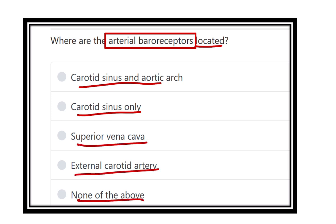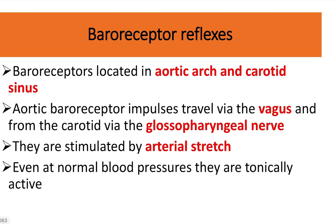The arterial baroreceptors are located in the aortic arch and the carotid sinus — these are the two important locations. Aortic baroreceptor impulses travel via the vagus nerve, and from the carotid sinus, signals travel via the glossopharyngeal nerve.